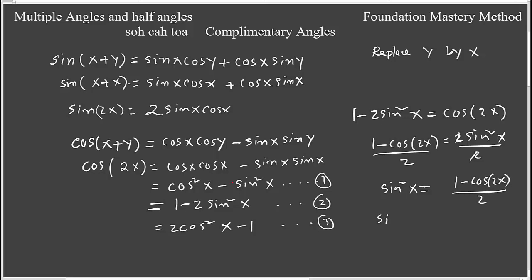So then we get sine squared x is 1 minus cosine 2x over 2. So then sine x will be plus or minus square root of 1 minus cosine 2x over 2. The same way you can figure out cosine x will be plus or minus square root of 1 plus cosine 2x over 2. So we produce these angles.